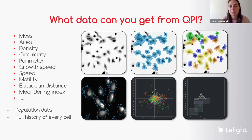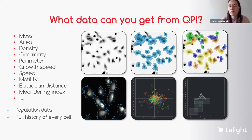Many QPI microscopes available nowadays on the market already come with nice analytical software that allows you to view the data separately or view the population data separately for each cell. You can play with dot plots and do some population gatings, which may resemble flow cytometry, but this is all based on imaging data — on QPI data — which are label-free.